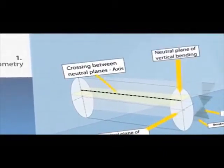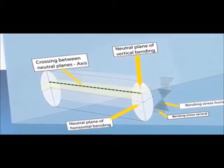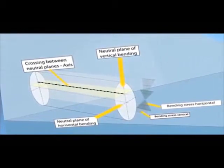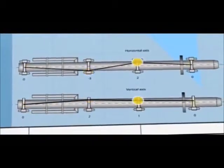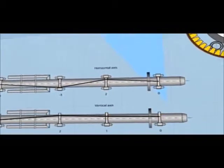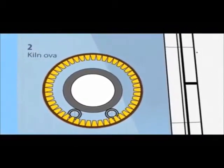1. Kiln axis geometry must be aligned, as it determines the distribution of the weight load among the kiln supports and the longitudinal distribution of bending stresses in the kiln shell.